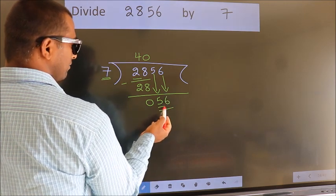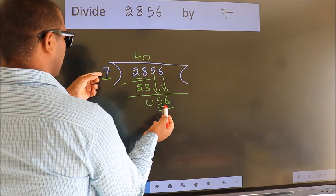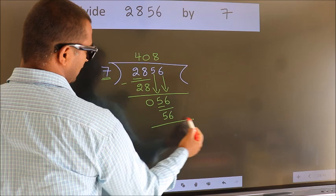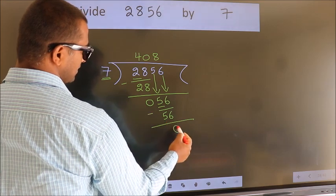When do we get 56? In the 7 table. 7 eights are 56. Now we subtract. We get 0.